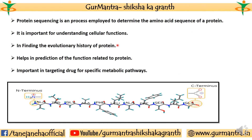We already discussed why protein sequencing is important and what it is in Part 1 of this presentation. The N-terminus and C-terminus are present for a peptide. We have now determined the amino acid composition and quantified how much concentration is present in a peptide. Our next step is to determine the order of amino acids.